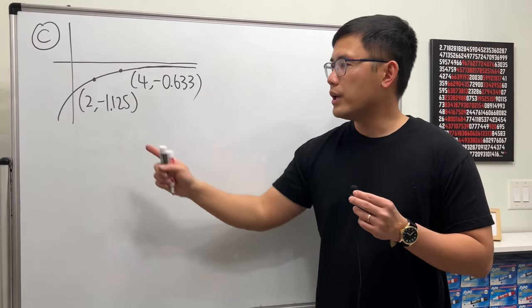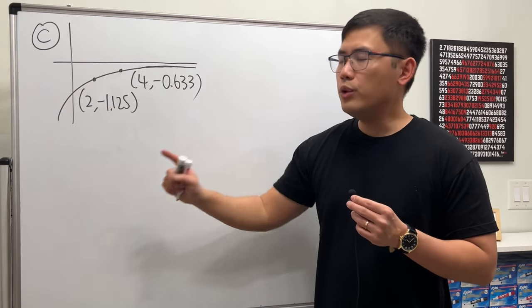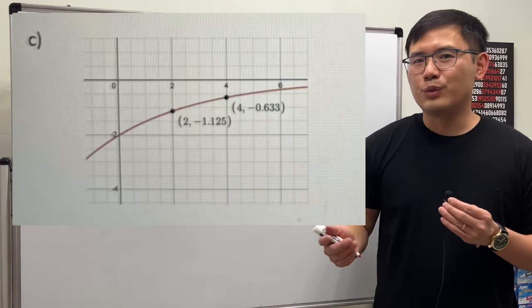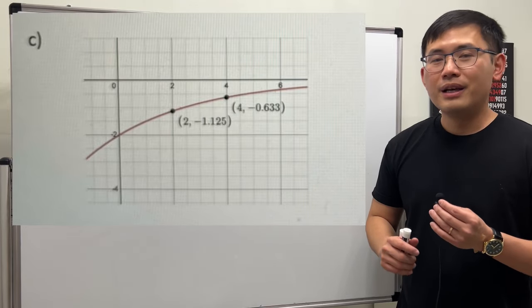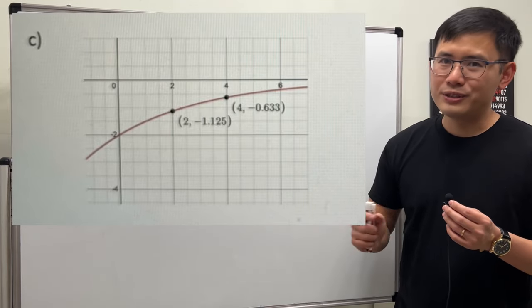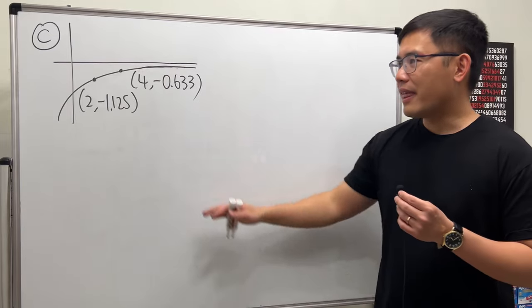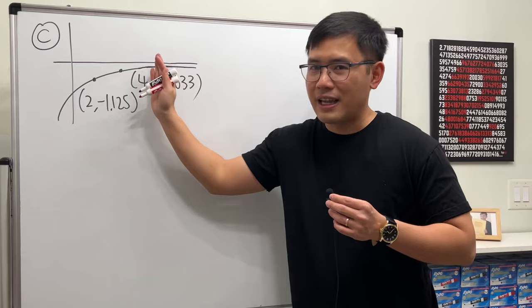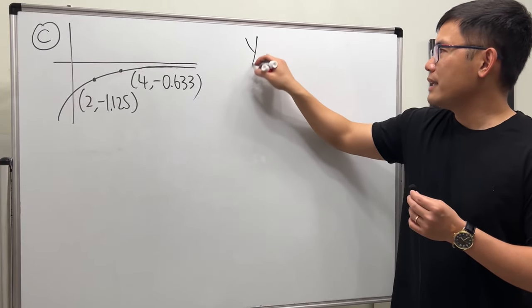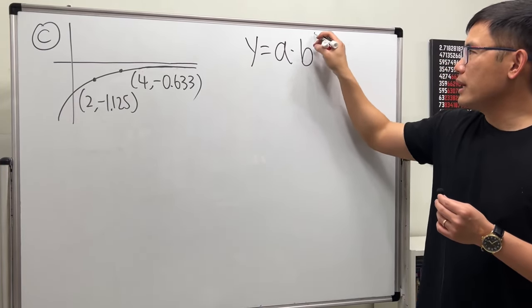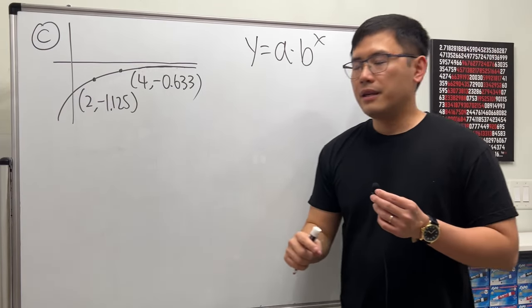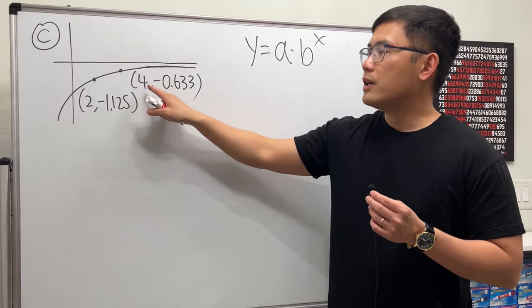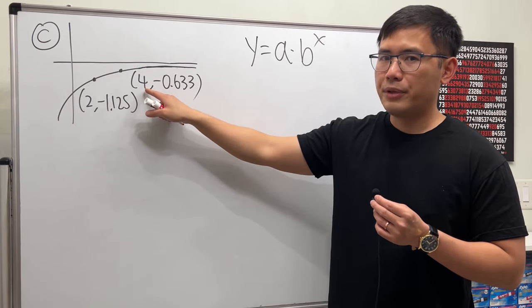Now, for this question, we are given these two points. We do not have the y-intercept, but if you take a look at the graph, you can see the y-intercept is (0, -2). Whenever you know that, use that. It's easier. But I think this is the intended question, so I'll just stick with this. Let's go ahead and start with y equals a times b to the x power for exponential function.